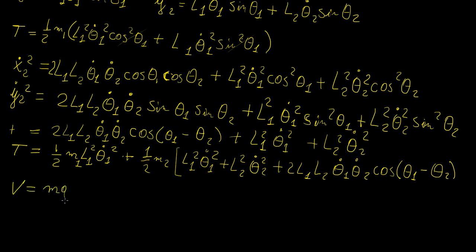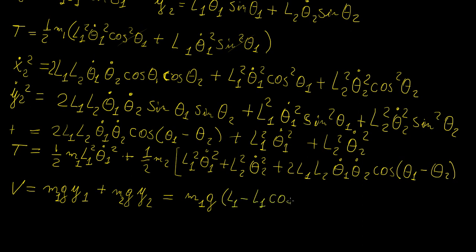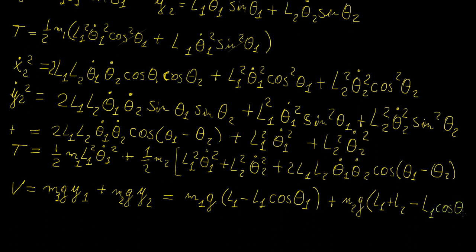The potential energy is going to be m1*g*y1 plus m2*g*y2 — we only have gravitational potential energy in this case. Substituting in our expressions: V = m1*g*(L1 - L1*cos(theta_1)) + m2*g*(L1 + L2 - L1*cos(theta_1) - L2*cos(theta_2)). That gives us our potential energy.